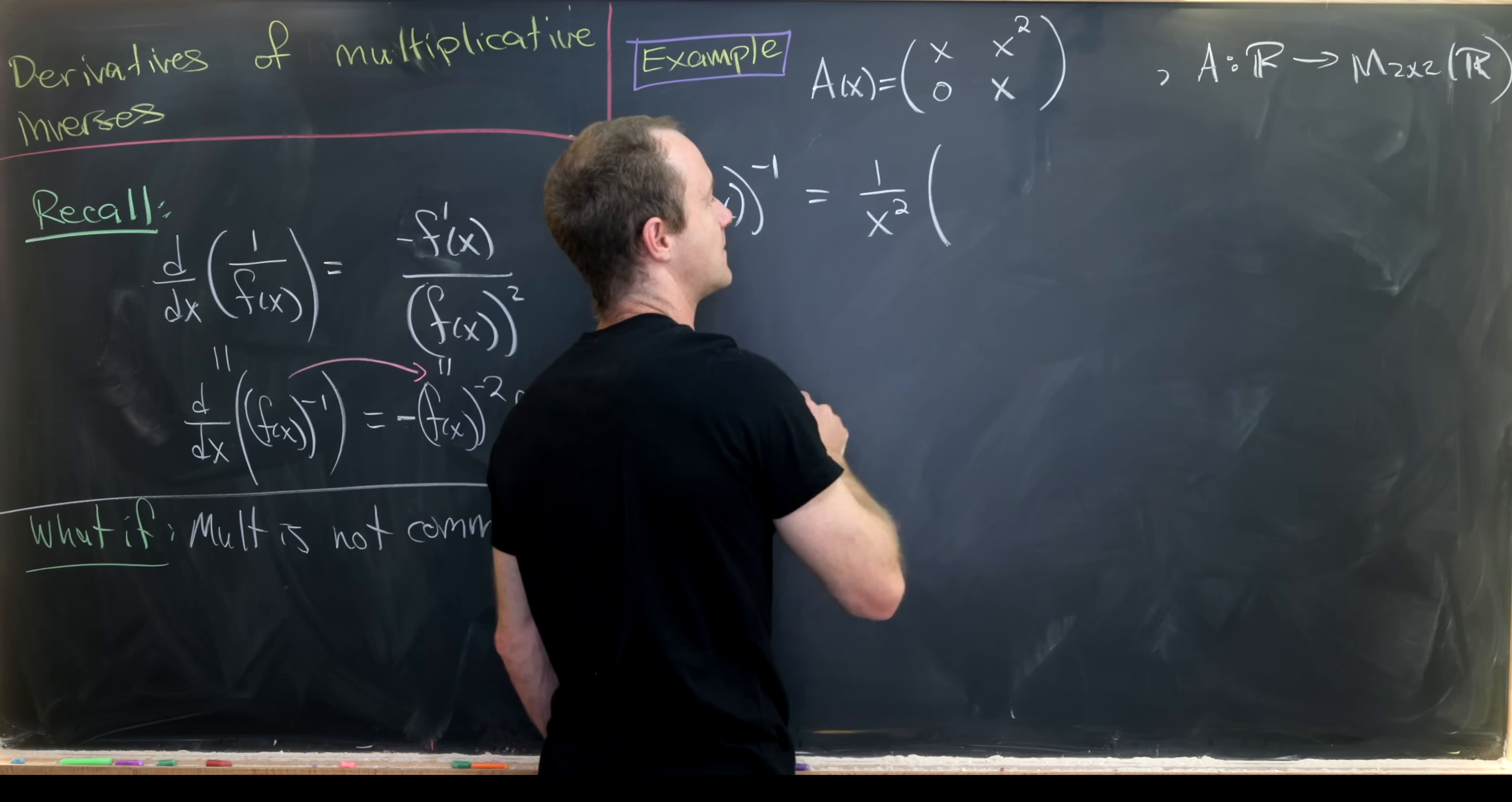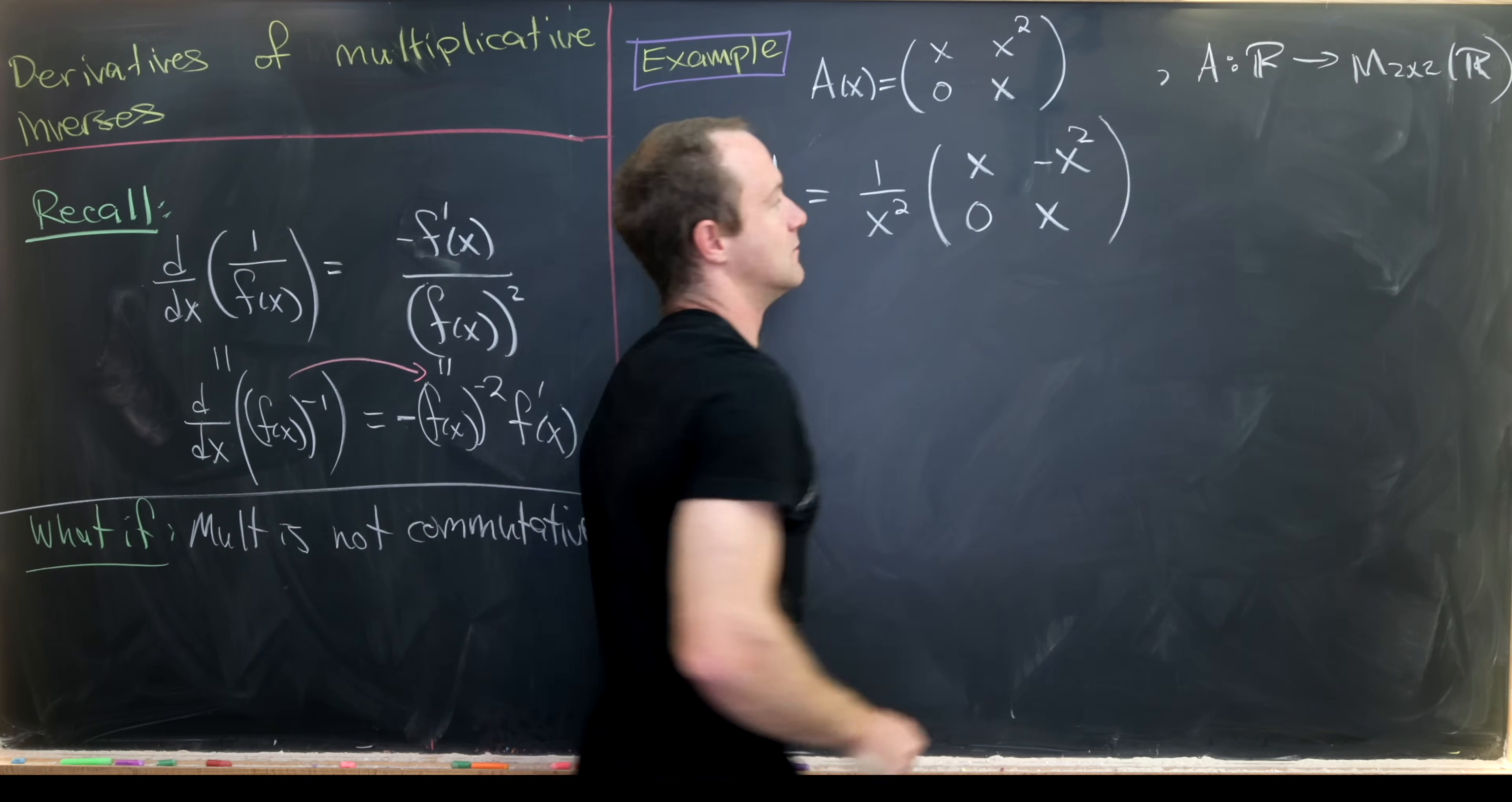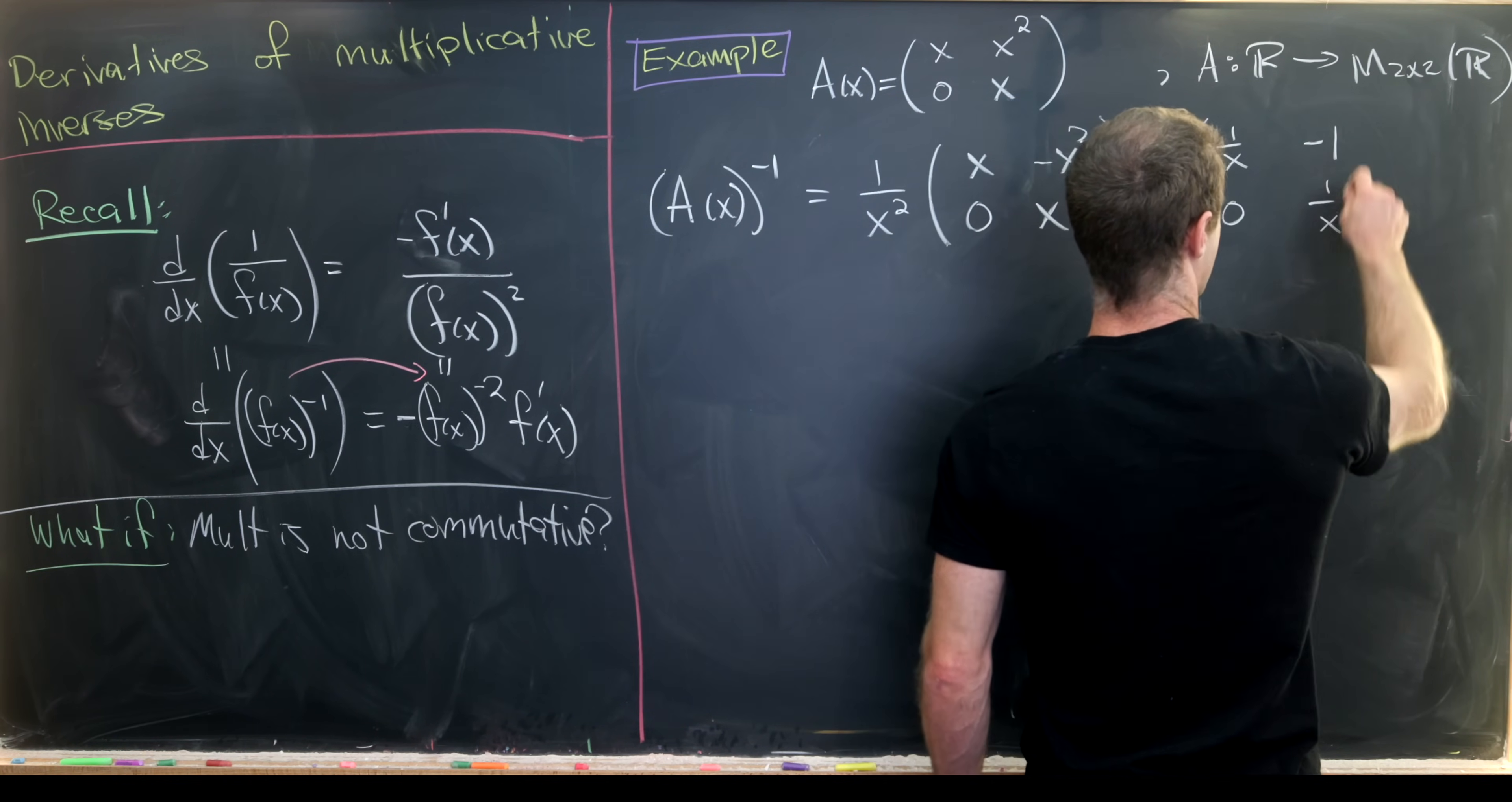We have to swap the order of the things on the diagonal, but those are the same, and then negate the off diagonal. Multiplying this 1 over x squared through will give us 1/x here, a minus 1 here, 0, 1/x.